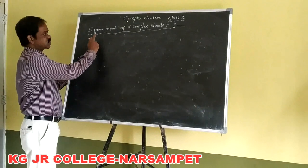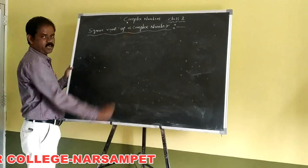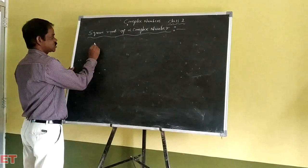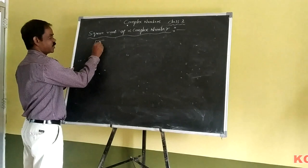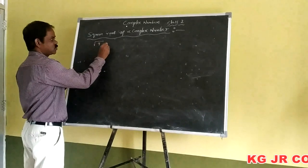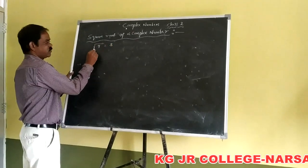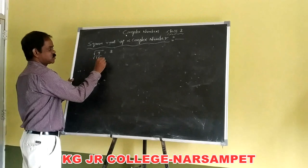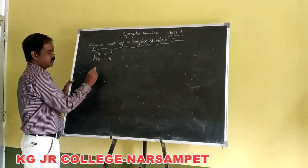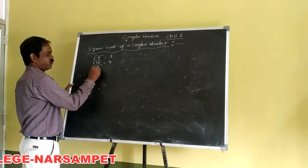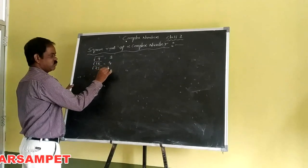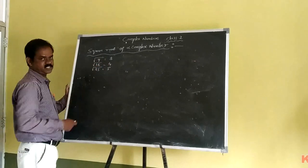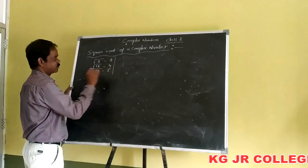Now we have to find the square root of a complex number. Generally we know that the square root of 9 is equal to 3, the square root of 16 is equal to 4, and the square root of 25 is equal to 5. This is the great basic concept.